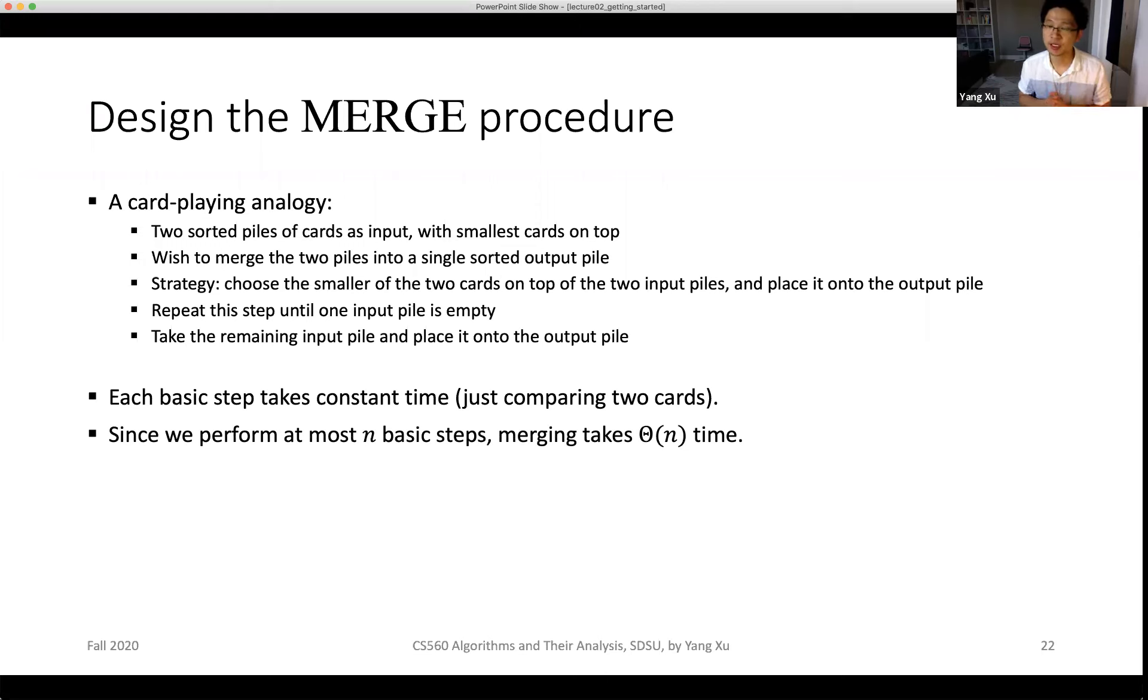Here the big theta appears again. You can think of big theta of n as a generic linear function, like a times n plus b, where a and b are constant coefficients. This is much faster than a quadratic function.